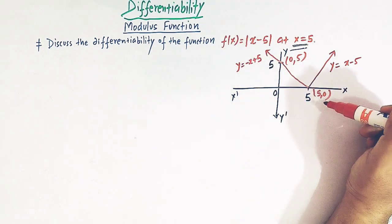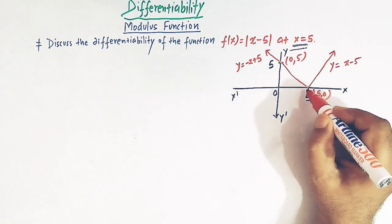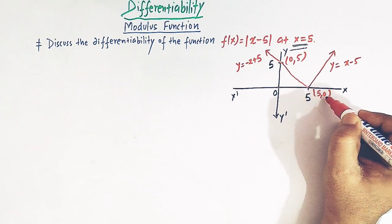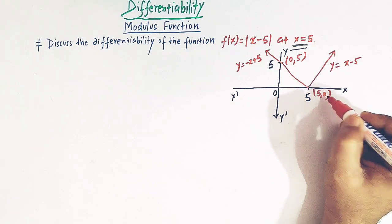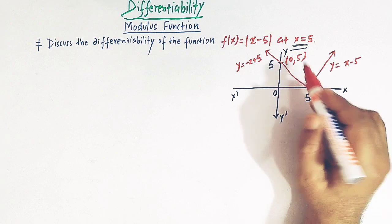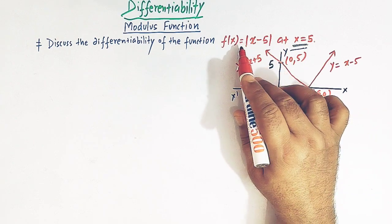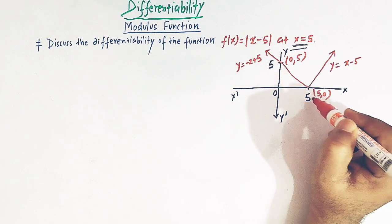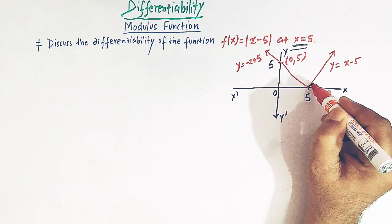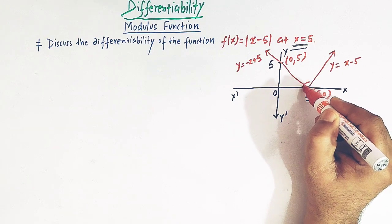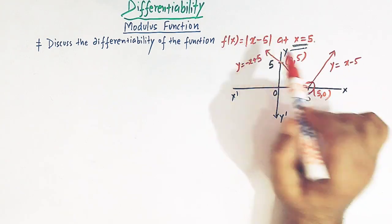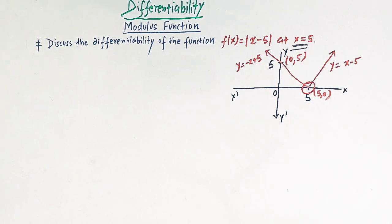This function intersects the x-axis at x = 5, that is at the point (5, 0). The mod function bends at this point x = 5, and we have to test the differentiability of this function at x = 5.